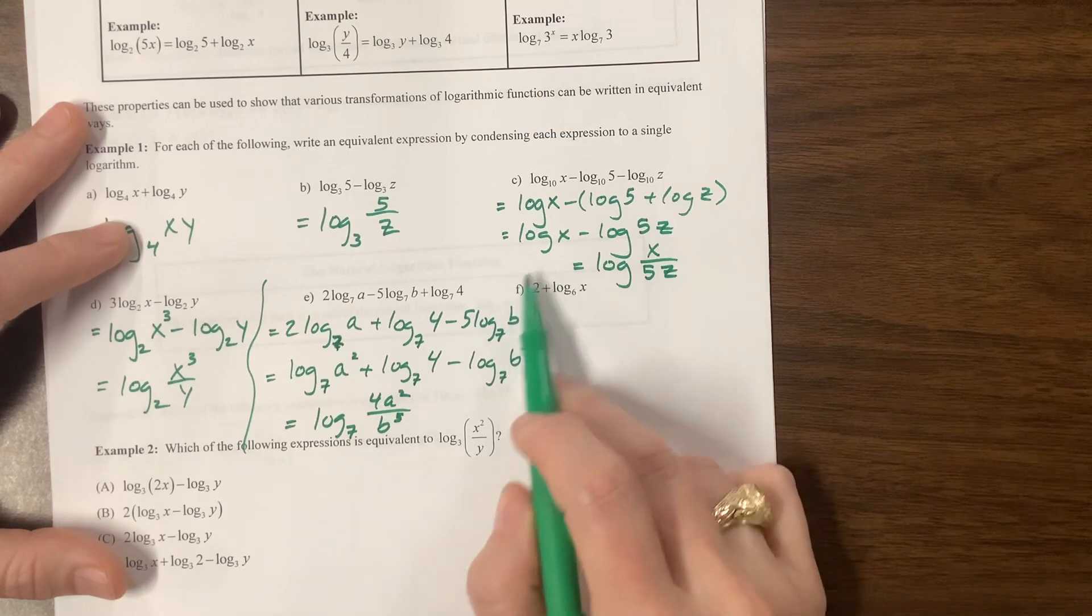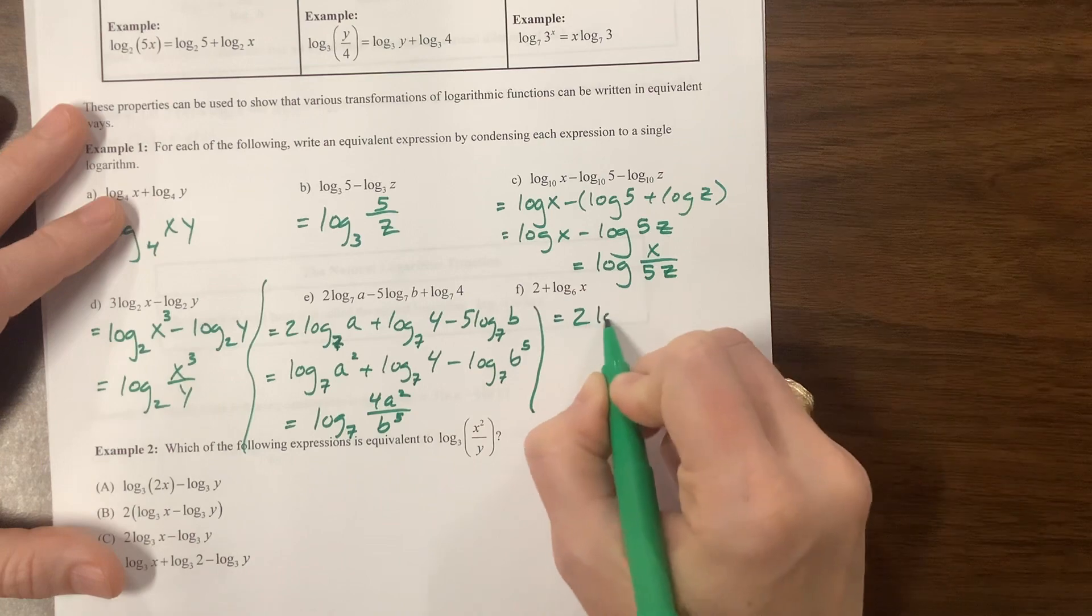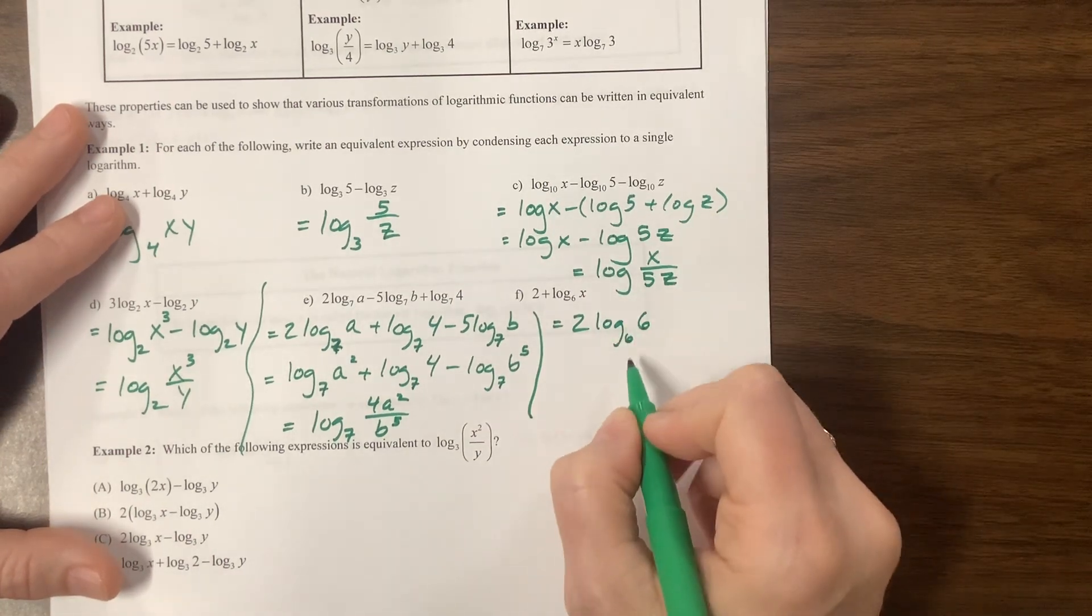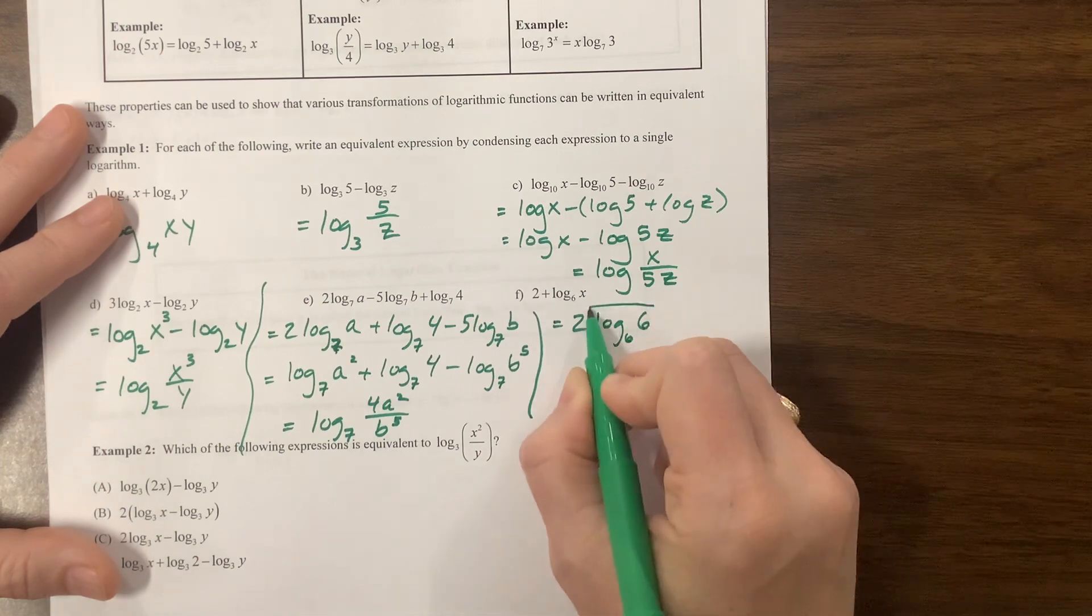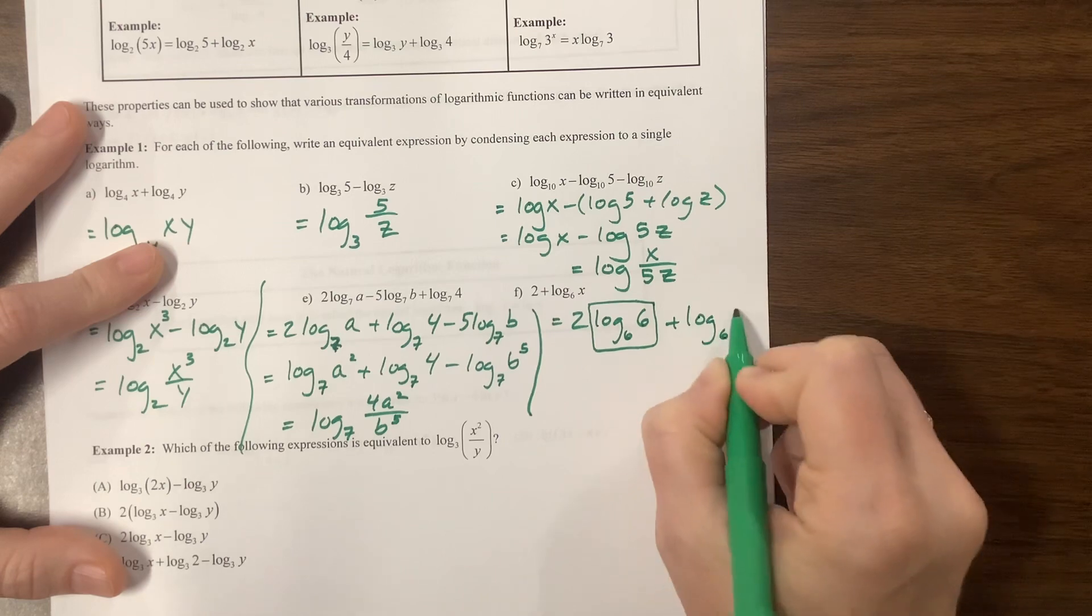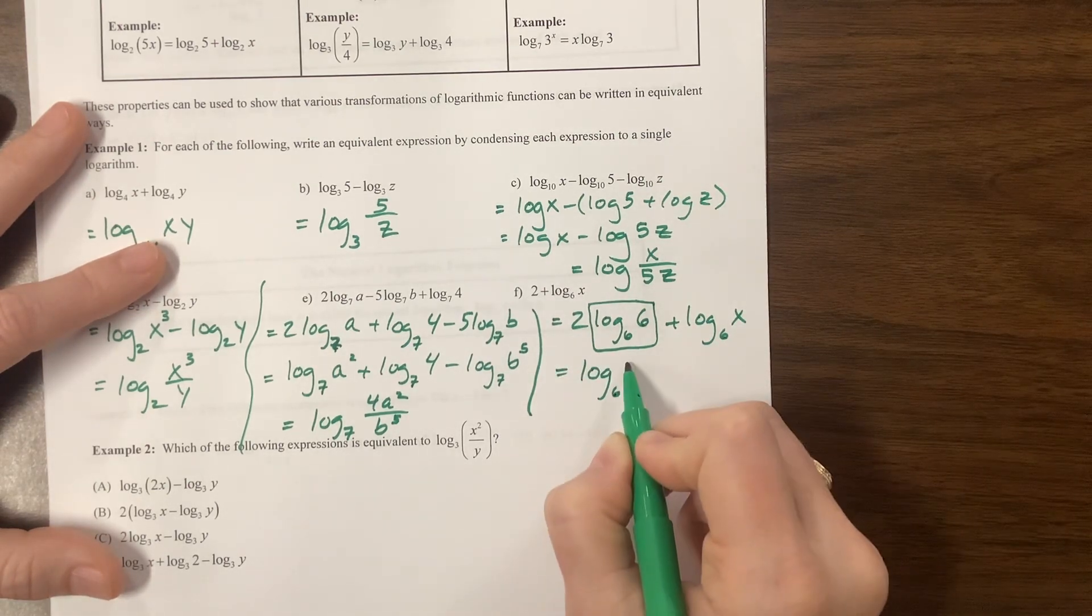Notice we have a log base 6 here. So I need somehow to introduce a log base 6 here. So what I can do is I can say, this is 2 times log base 6 of 6, because log base 6 of 6 is 1. This right here is what I like to call a funky form of 1. And then I have plus log base 6 of x.